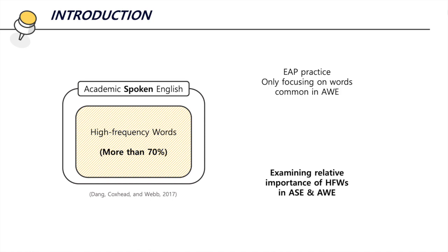According to Thanh, Coxhead, and WAP, high frequency words take up more than 70% of the most frequent words in academic spoken English. This brings up the need for looking into the relative importance of high frequency words in academic spoken and written English, not only focusing on vocabularies common in academic written English.